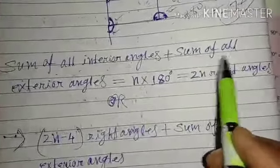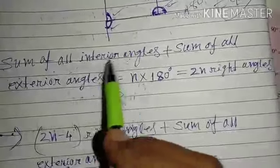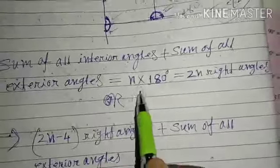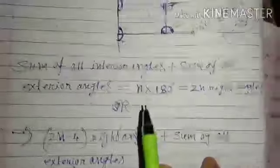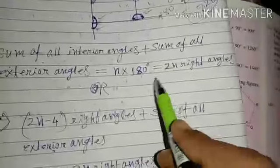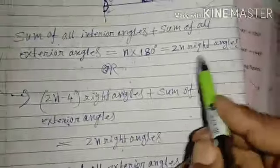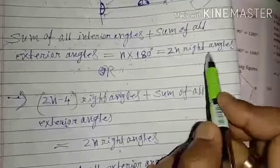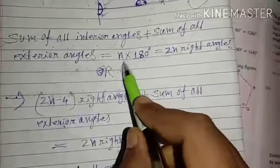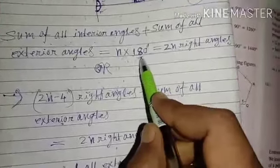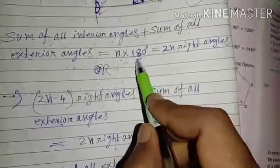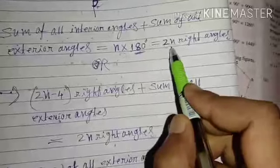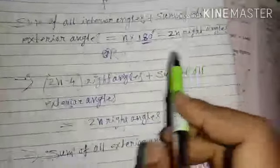So, sum of all interior angles plus sum of all exterior angles equals n into 180. Now, n into 180 means twice n right angles, because n into 180 equals n into 2 into 90 degrees, which means twice n right angles.